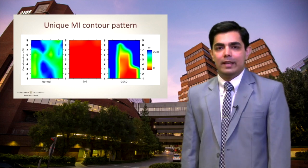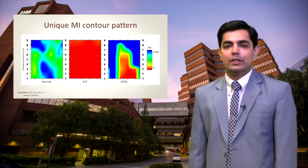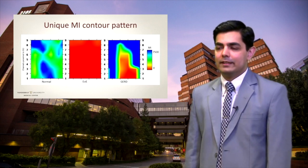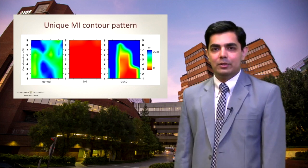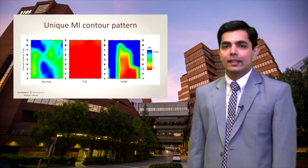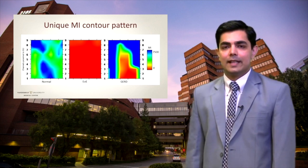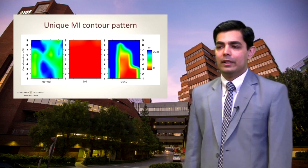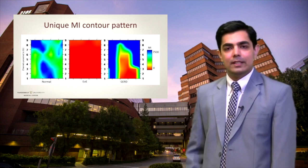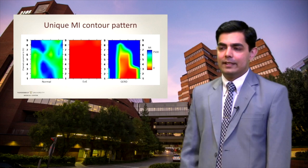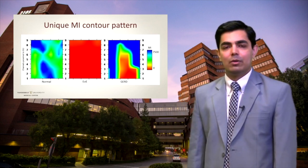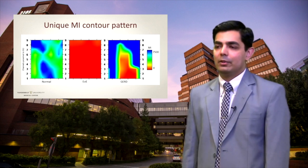We found that our patients had a unique MI contour pattern that allows us to distinguish GERD, EOE, and normal during endoscopy. As shown here, this is a heat map of impedance measurements. Red indicates low impedance values, while blue and green indicate high impedance values or normal lining. In EOE, red — which is low impedance — is present throughout the esophagus. In patients with GERD, because acid reflux causes more damage to the distal lining of the esophagus, MI values are low or red in the distal esophagus but normalize to green or blue farther away from the squamous-columnar junction. Patients with normal findings have blue or green, or high values, throughout the esophagus.